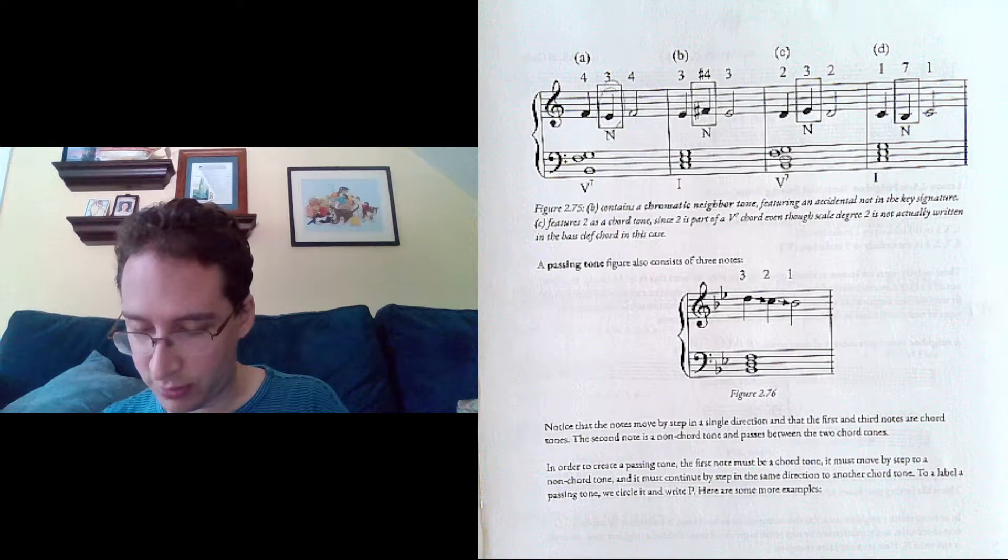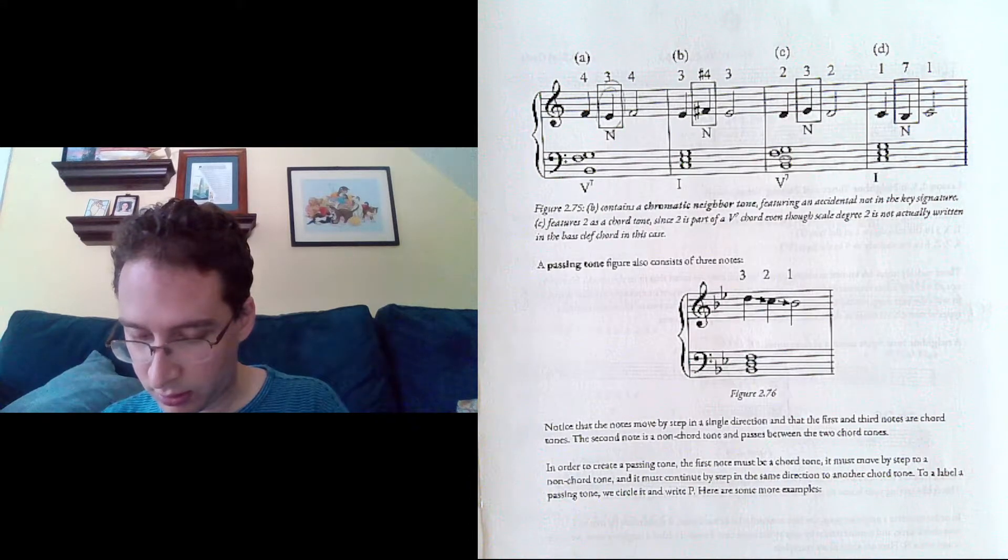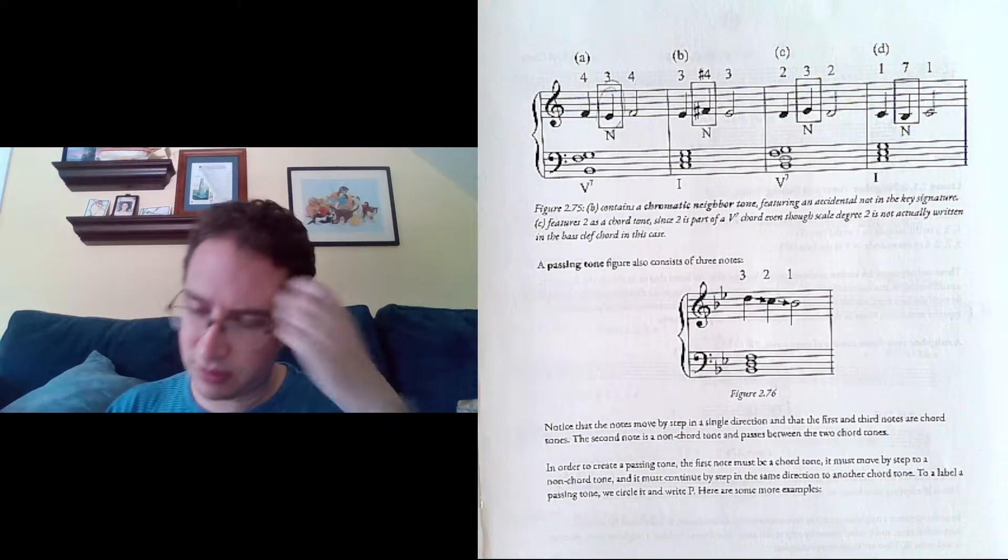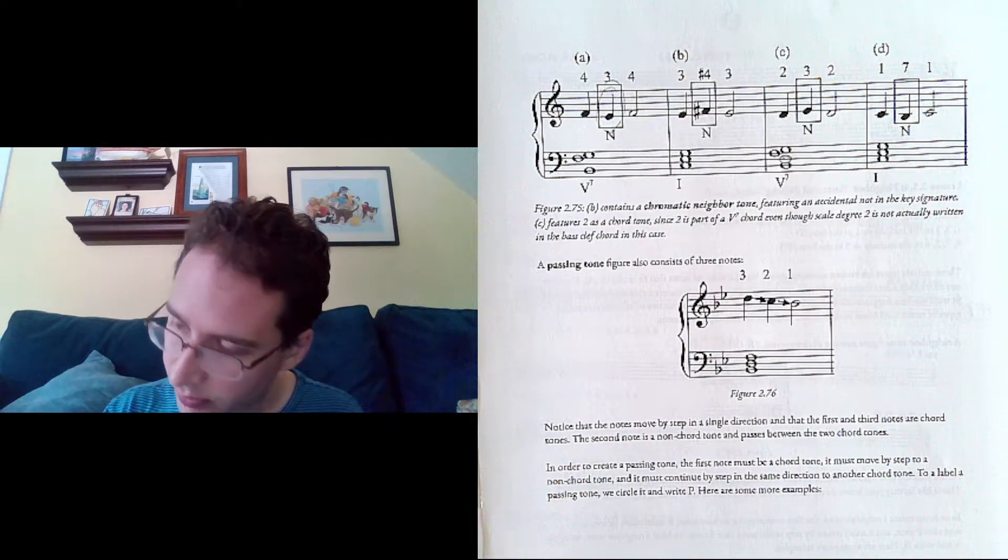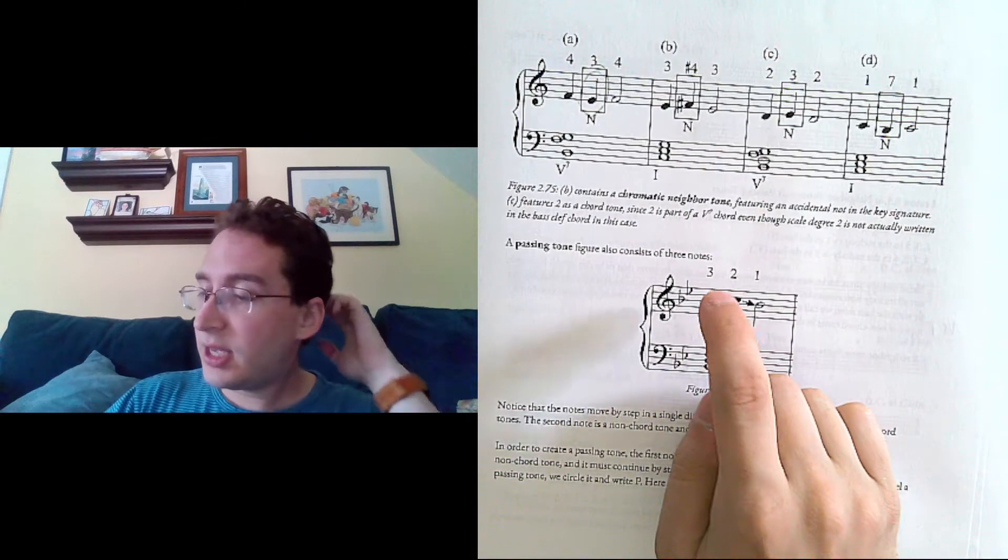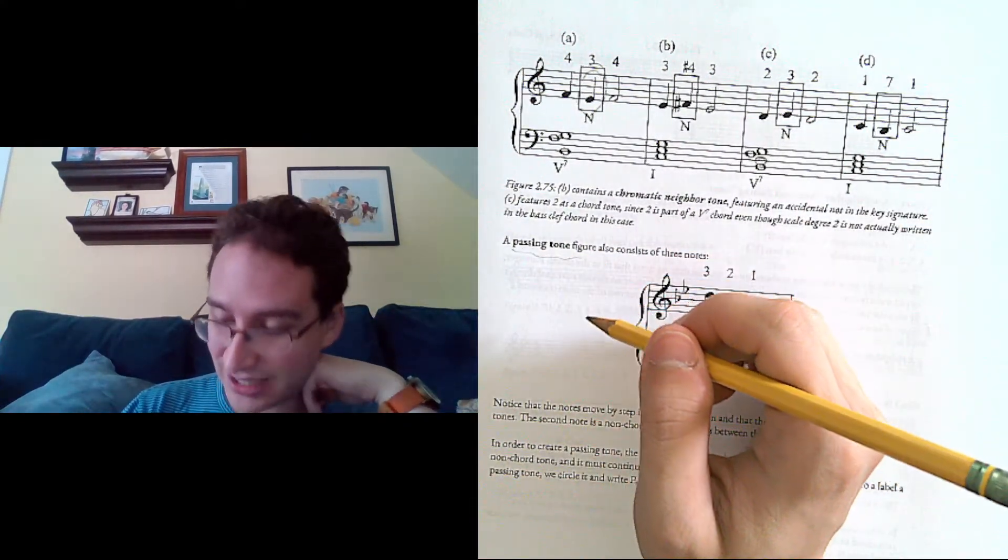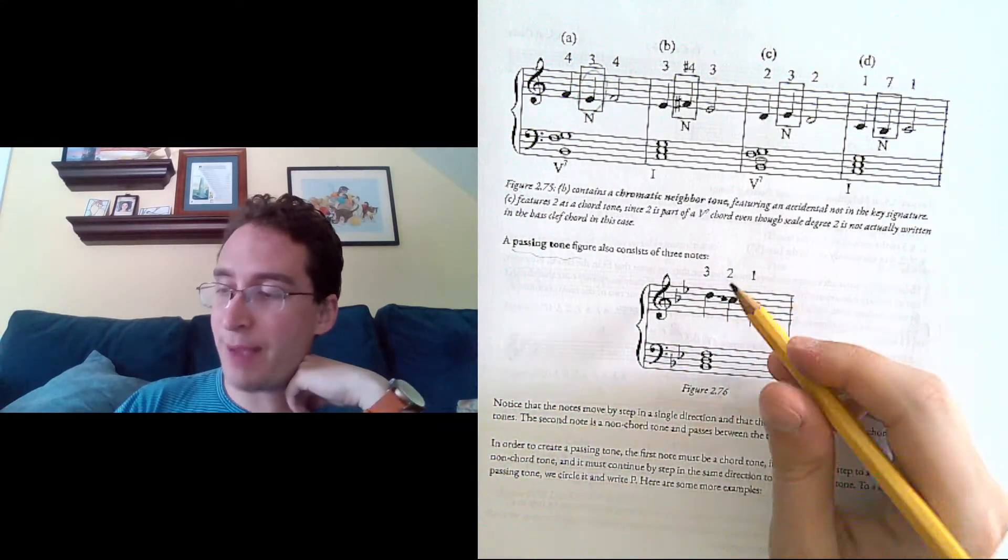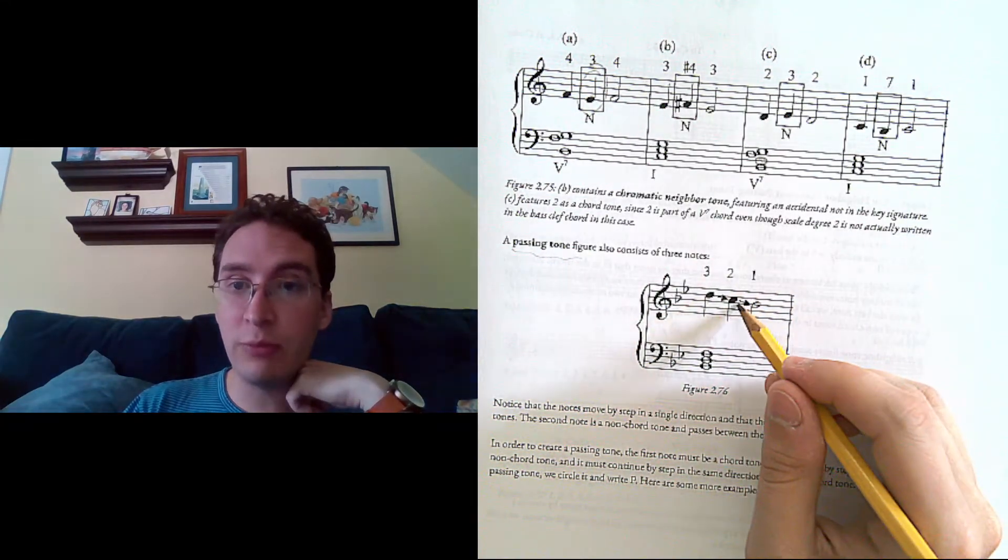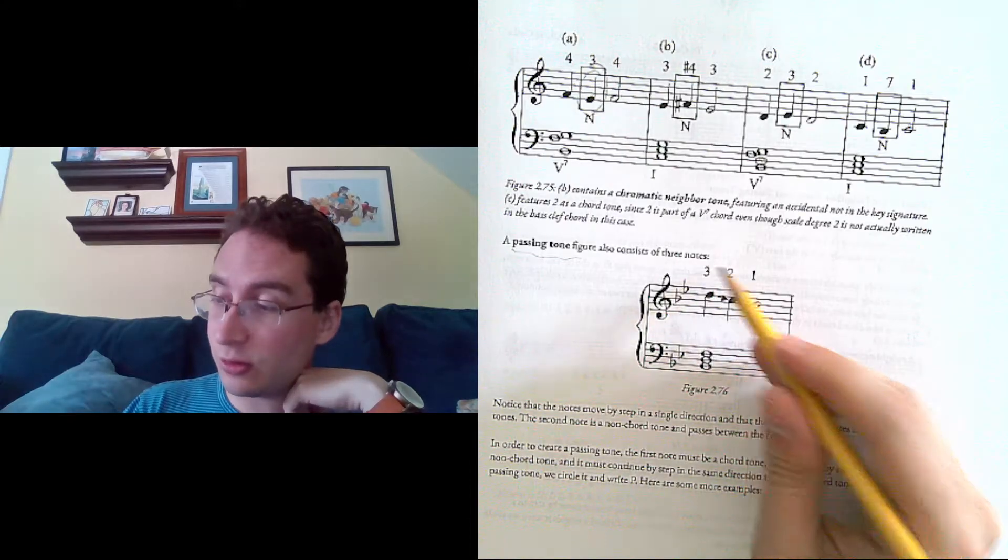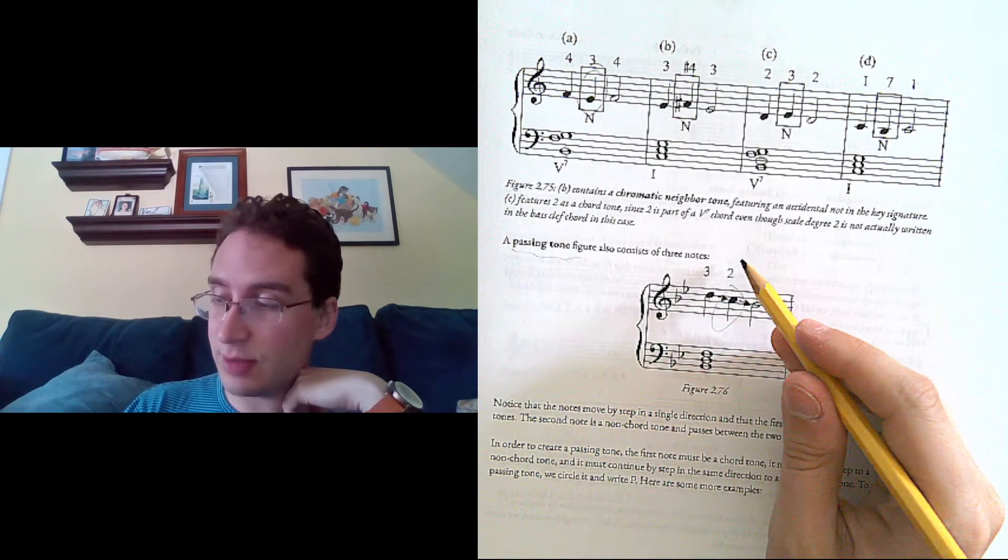And then our last example. Here we have the other kind of non-chord tone that we're going to talk about, the passing tone. So, the idea with the passing tone is you start on a chord tone, move by step to a non-chord tone, and then move by step in the same direction to a chord tone. So, this passes down, start on a chord tone, end on a chord tone, something in the middle.